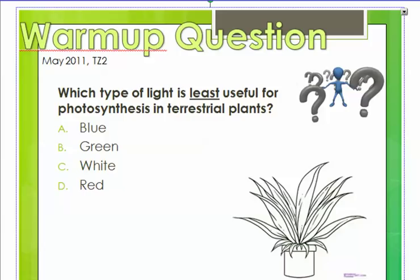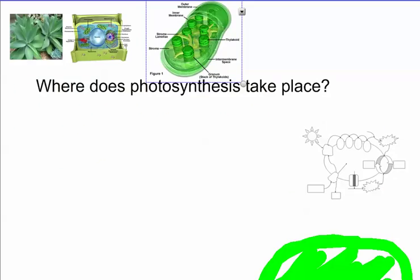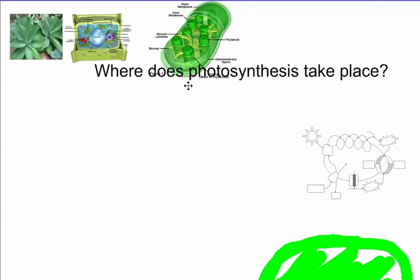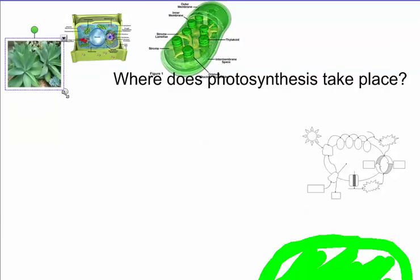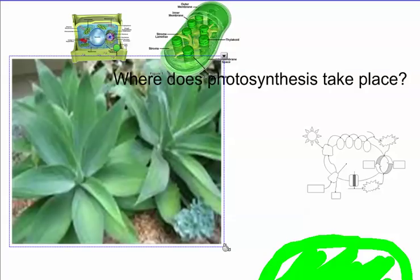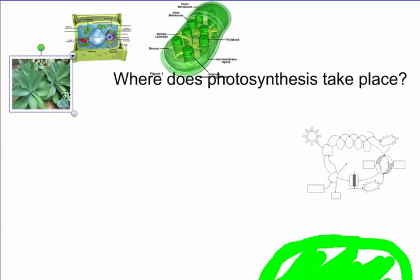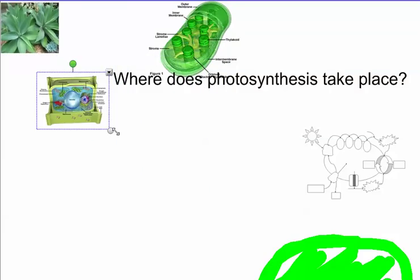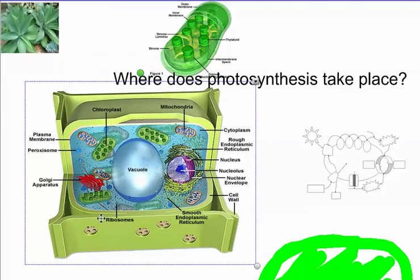We need to understand where photosynthesis is actually taking place. Here we have a plant with green leaves. If we go in and look at the plant cells, plant cells are special - they're kind of boxy, they have this cell wall and everything like that. But the reason why they look green is because of these special organelles in here called chloroplasts, which are roughly the same size as mitochondria.